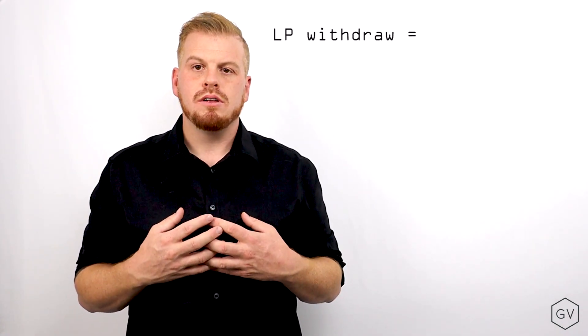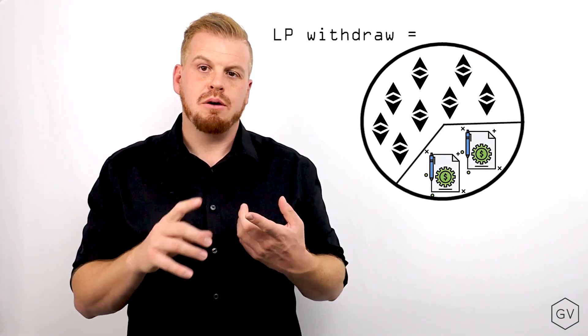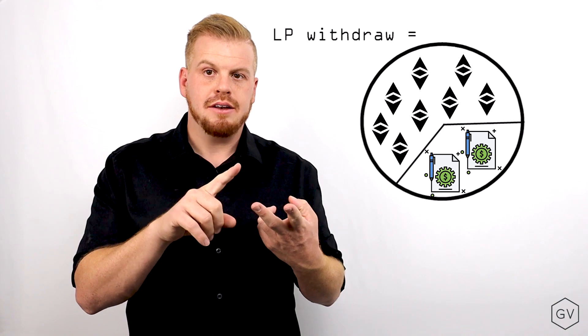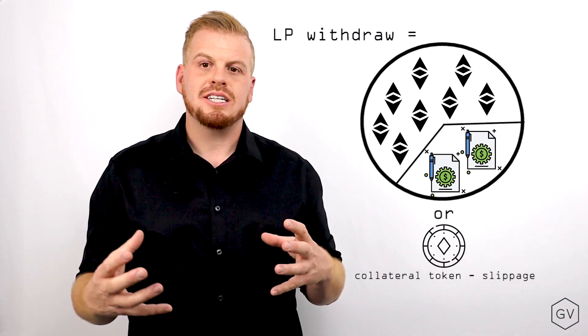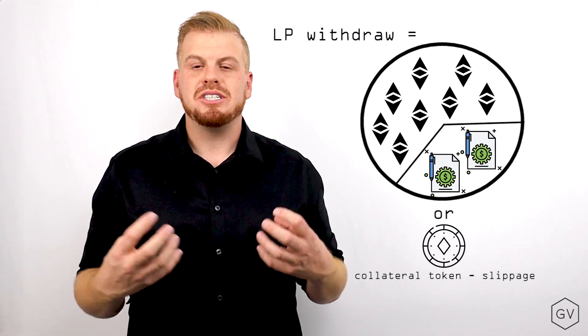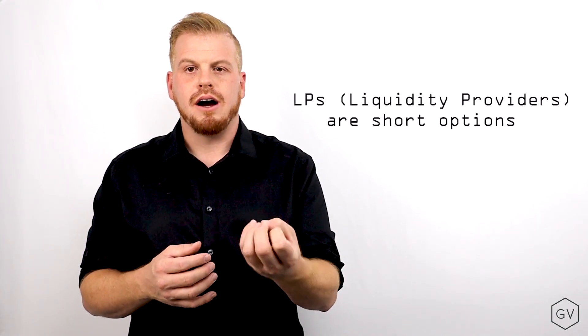When LPs want to withdraw collateral from a pool, they can either withdraw the mixture of the underlying pool, that would be options and the underlying collateral, or they can pay a small transaction fee or small slippage fee in order to receive only collateral back. In essence, the LPs are the people underwriting the options.